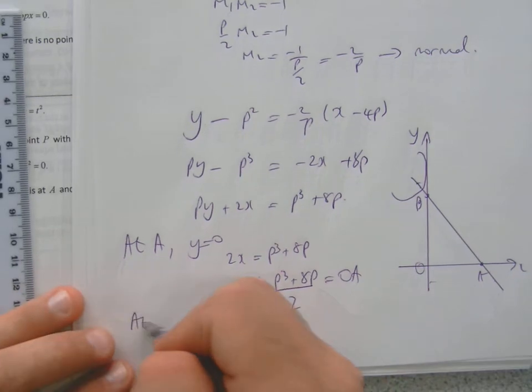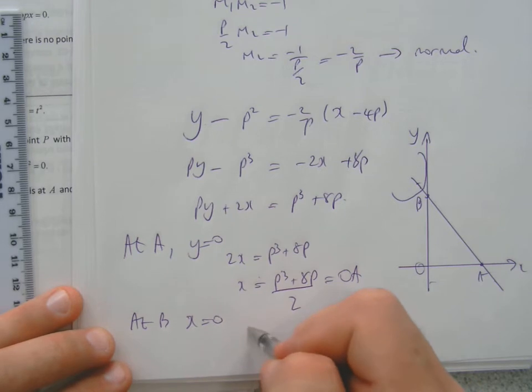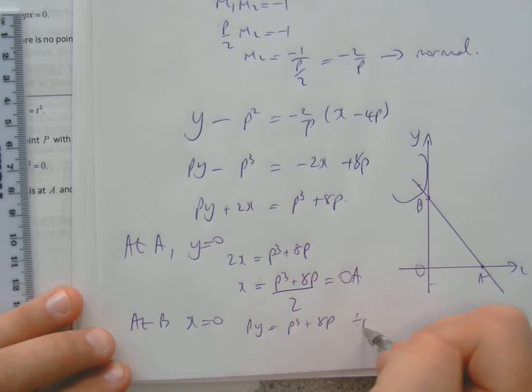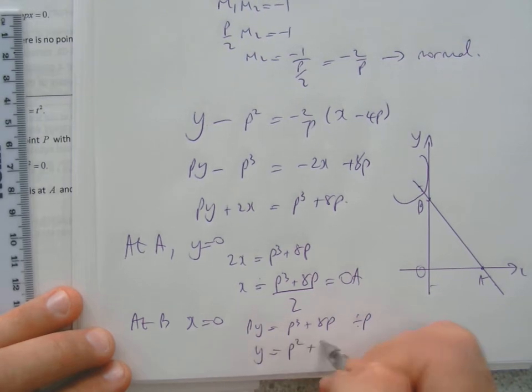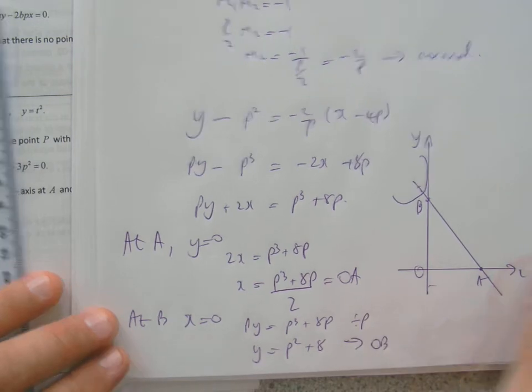At B, X equals 0 because it's on the y-axis, which means p Y equals p cubed plus 8p. Just divide through by p, so you get Y equals p squared plus 8. And that of course is OB.